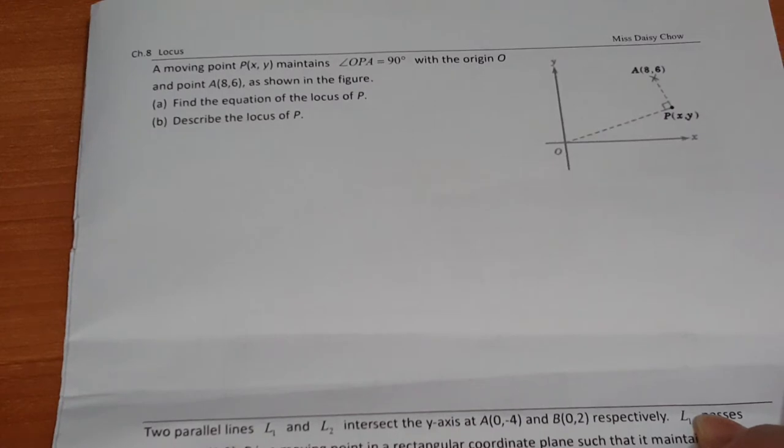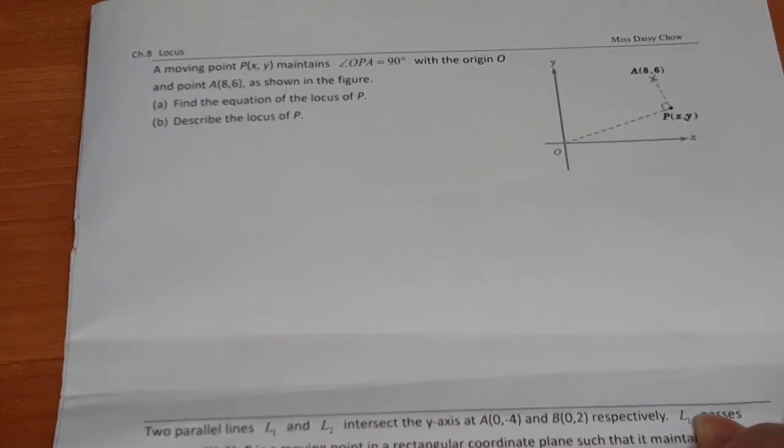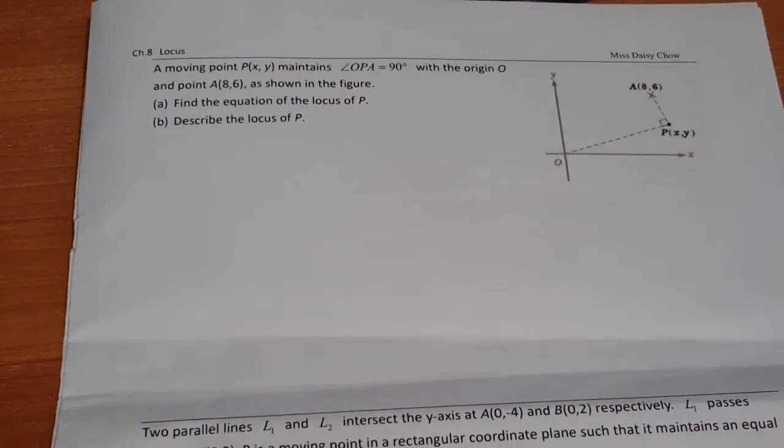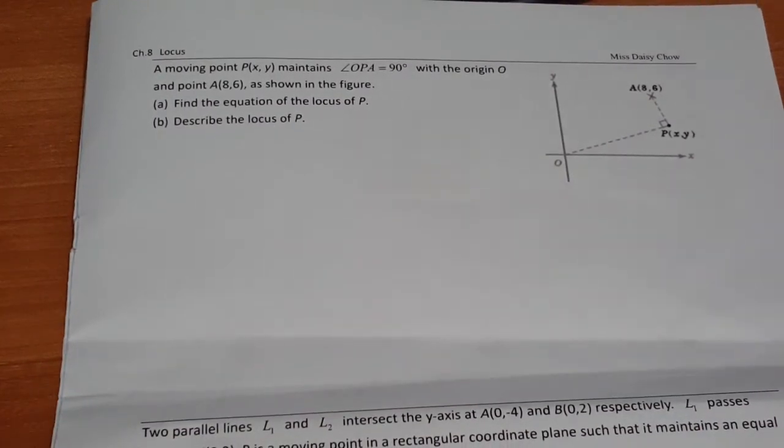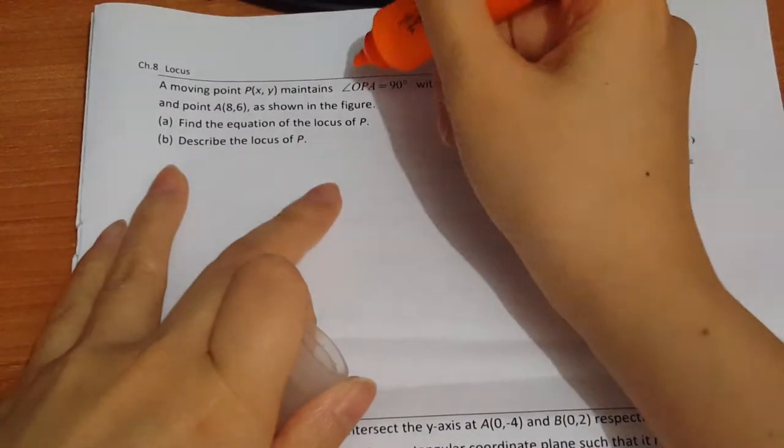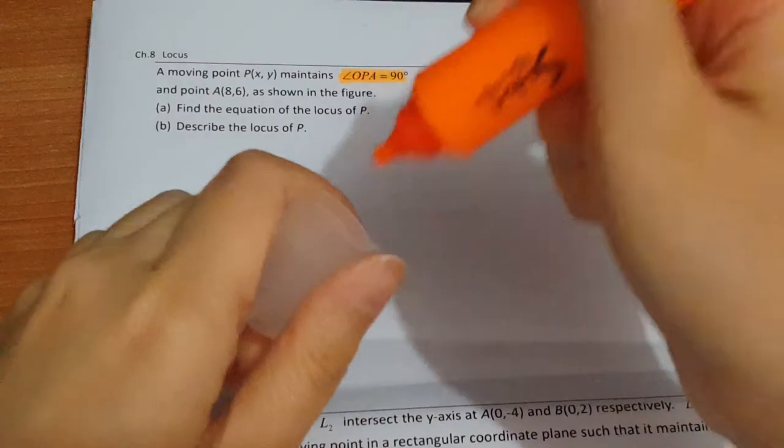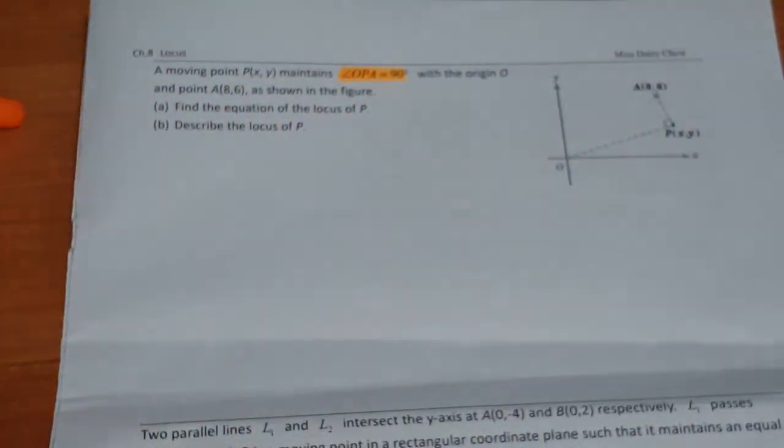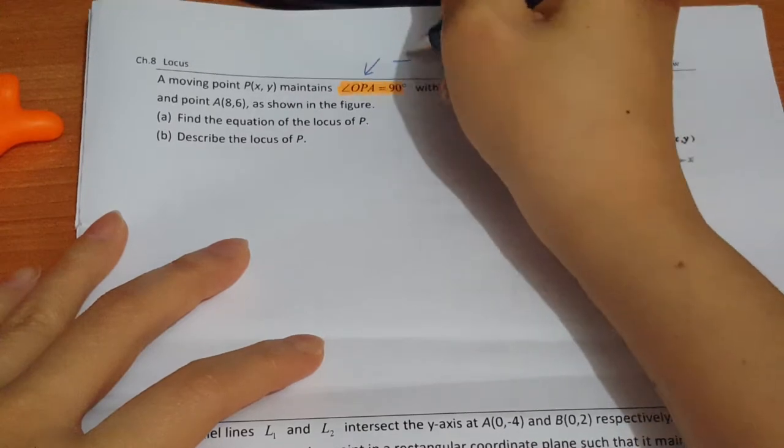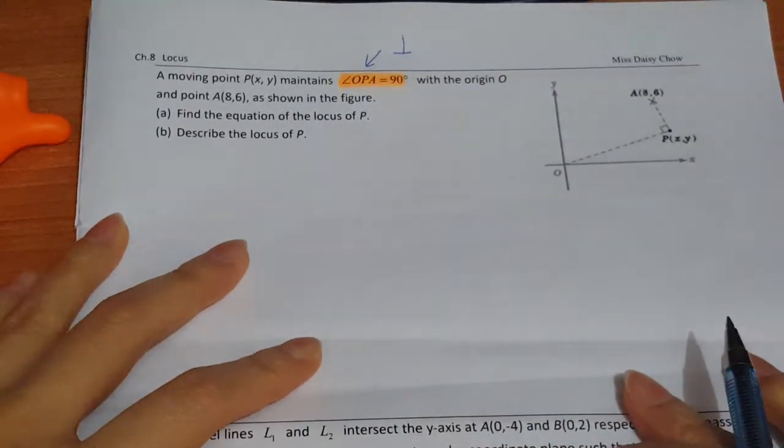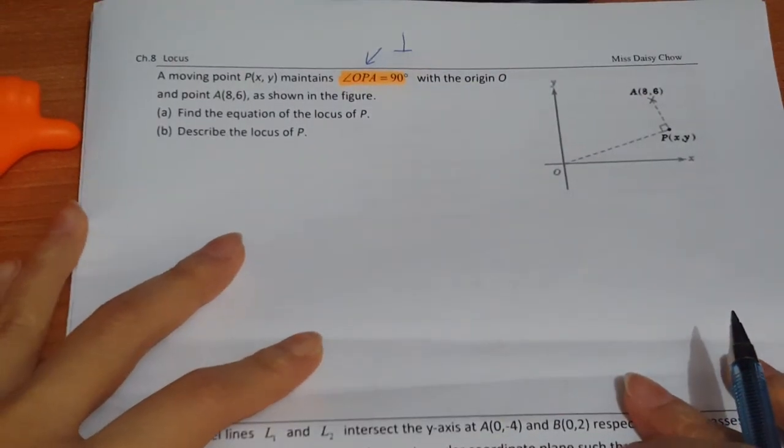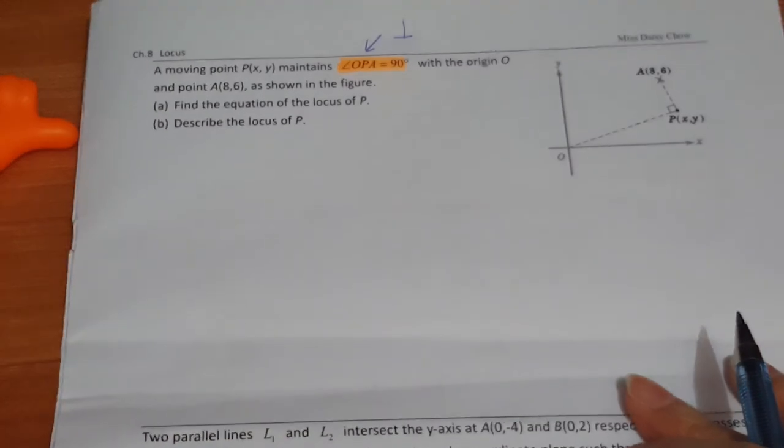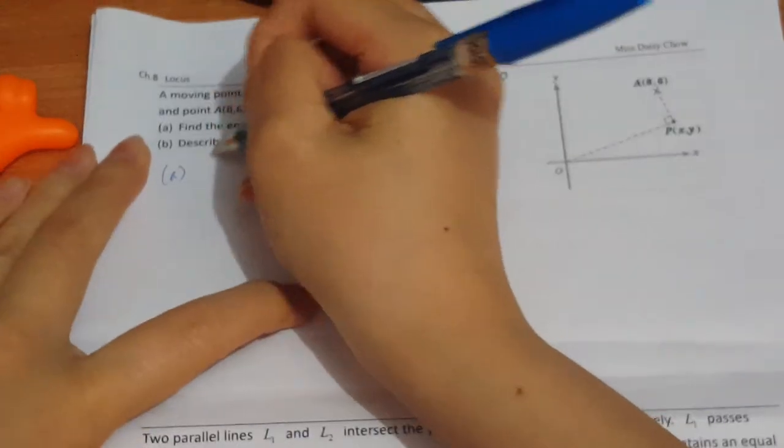Okay, the figure is given. Moving to part A, find the equation of the locus. The key points here would be they form 90 degrees, which means that they are perpendicular, which means that we have to calculate the slope.